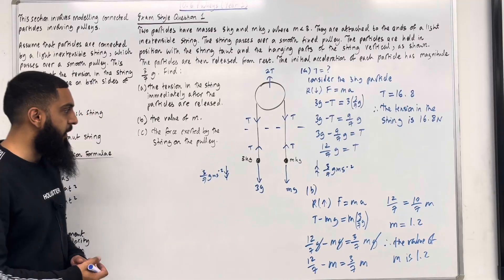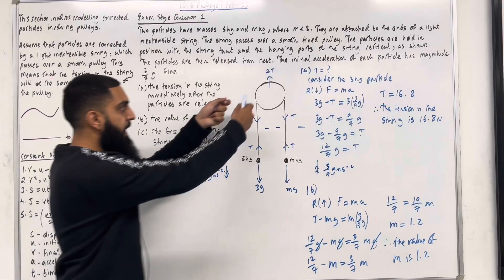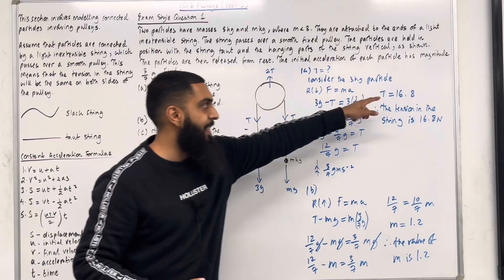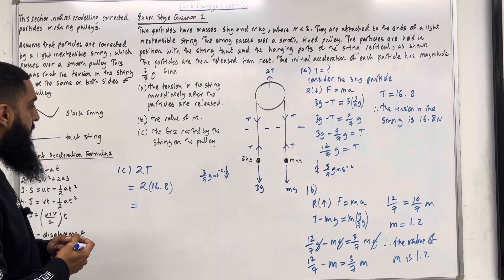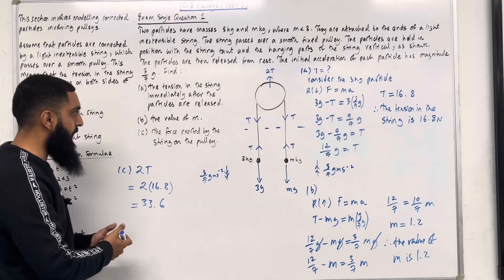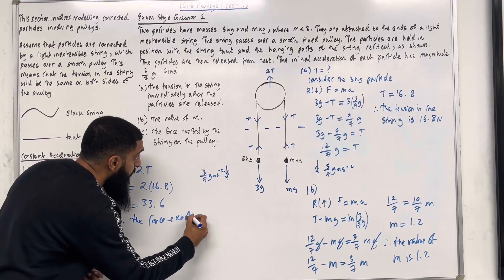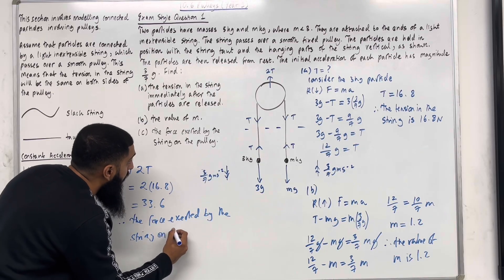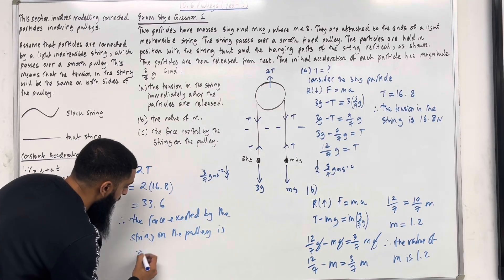Moving on to part C: find the force exerted by the string on the pulley. The force exerted by the string on the pulley is 2T — two lots of the tension. The tension is 16.8 N, so 2 × 16.8 = 33.6. Therefore, the force exerted by the string on the pulley is 33.6 N.